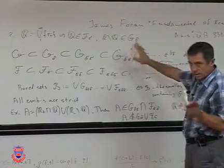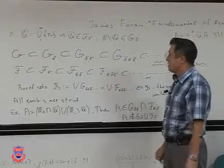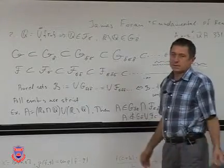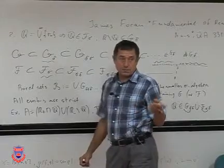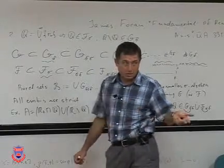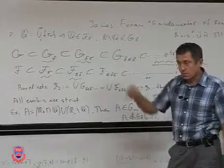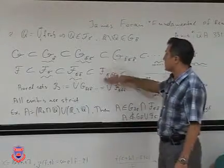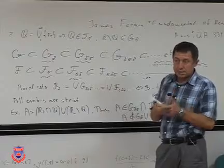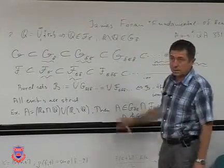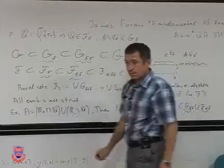It is difficult to give a constructive example showing the next level of strictness, but in analysis this hierarchy appears naturally. For instance, the set of points where a function is continuous is always G-delta, as you will prove in the homework. Keep in mind that all these embeddings are strict.